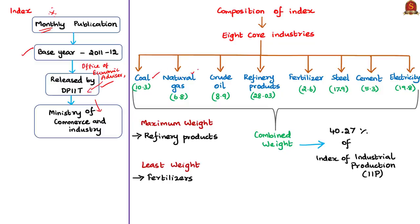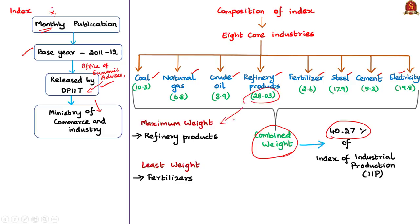The Index is released by the Office of the Economic Advisor under the Department for Promotion of Industry and Internal Trade (DPIIT), which comes under the Ministry of Commerce and Industry. The eight core industries are coal, natural gas, crude oil, refinery products, fertilizer, steel, cement, and electricity. Each industry is assigned weightage based on its weight in the Index of Industrial Production. Combined, these eight core industries account for 40.27% of the total IIP weight. Among them, refineries have the maximum weight of 28.03%, while fertilizers have the least at 2.6%.